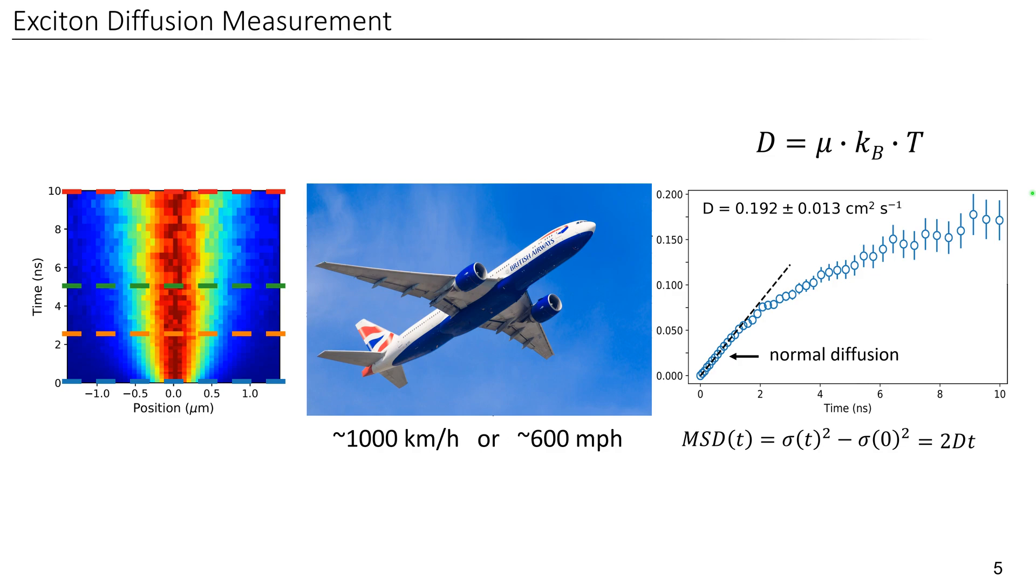Now we see this linear increase for early times. However, as time goes by, we observe a slowdown of the broadening, where we see a sub-diffusive behavior where the broadening slows down as time goes by. And this can be characterized by the diffusion exponent alpha. For alpha equals 1, we are in the normal diffusion regime, like at early times. And as alpha decreases, the diffusion becomes more and more sub-diffusive.